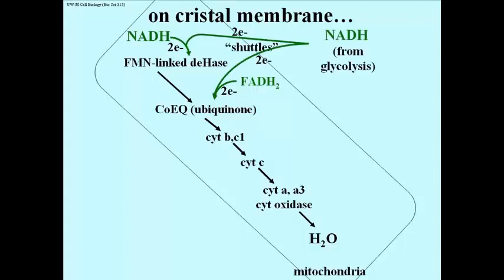Finally, NADH formed in the cytoplasm during glycolysis is also oxidized in the electron transport system. Since NADH can't cross the mitochondrial membranes to get into the matrix, chemical shuttles that can cross these membranes accept electrons from cytoplasmic NADH and deliver them to components of the electron transport system.